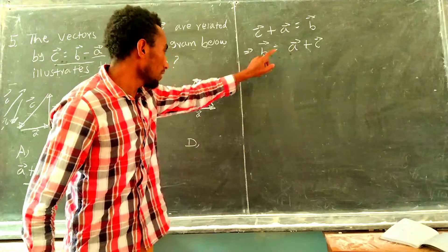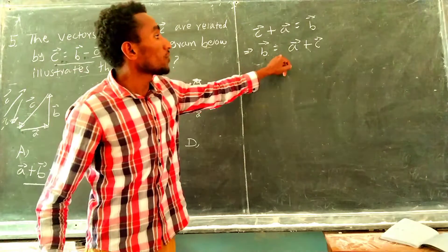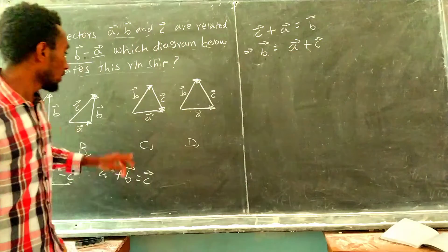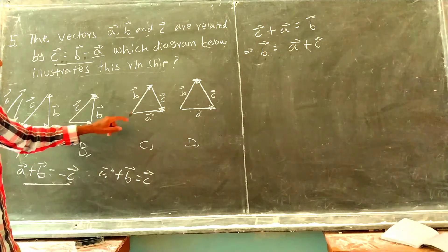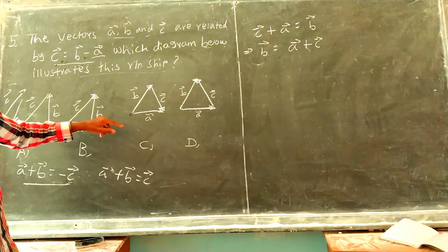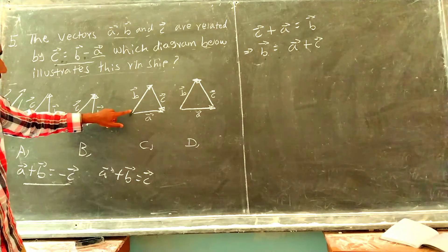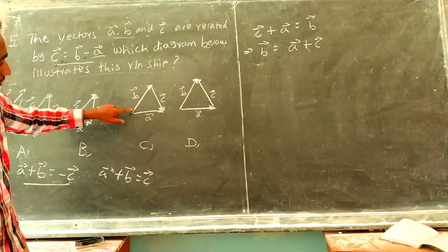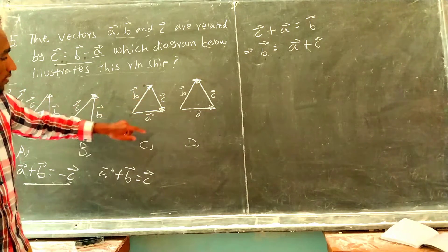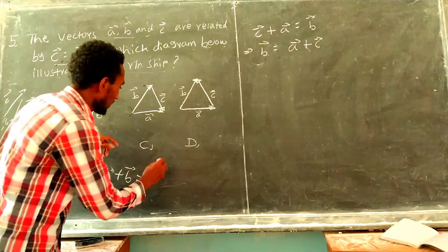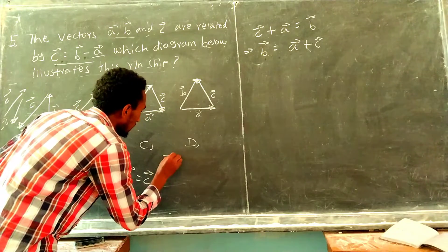A plus B is equal to C, and B is equal to A plus C. So the relationship — using the triangle rule — from the tail of the first vector to the tail of the last vector gives us a relationship with C.